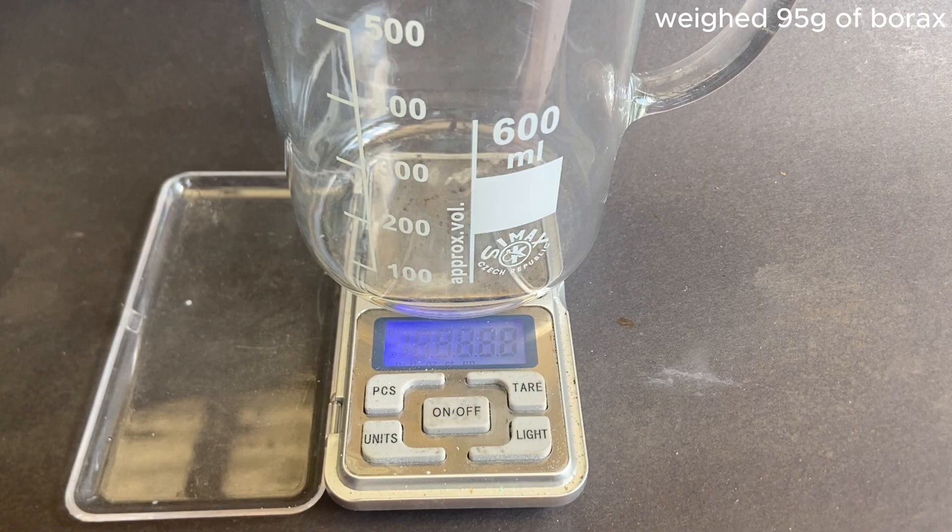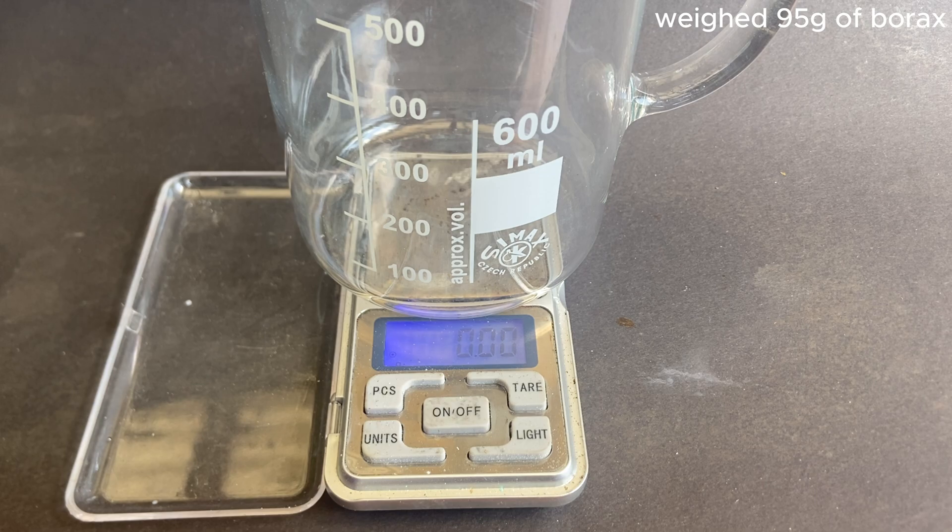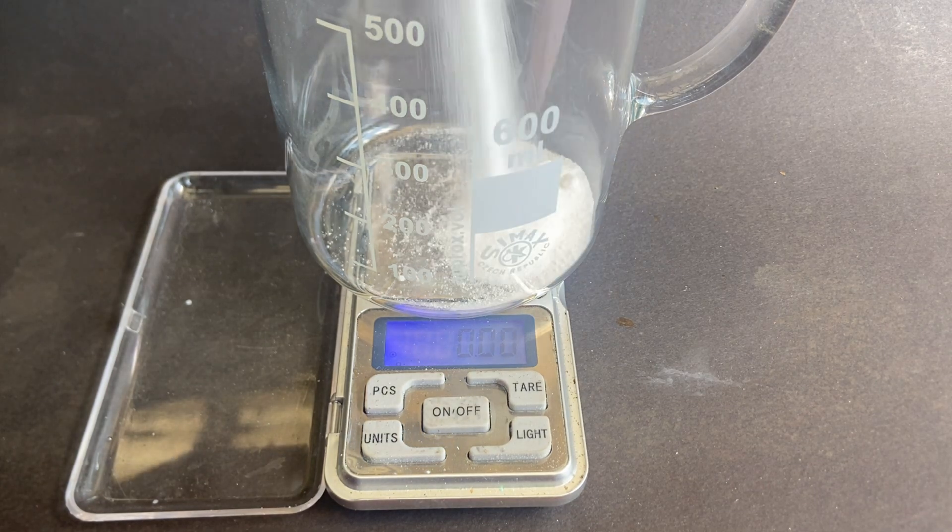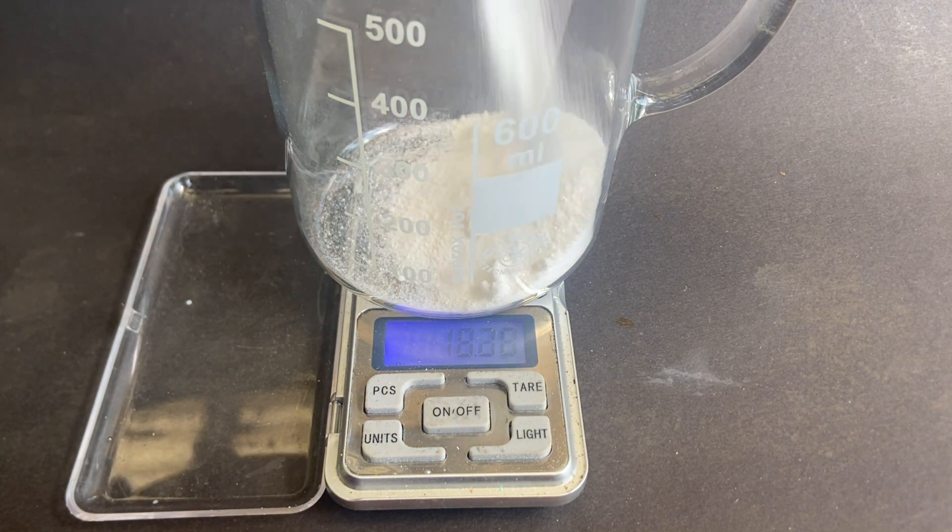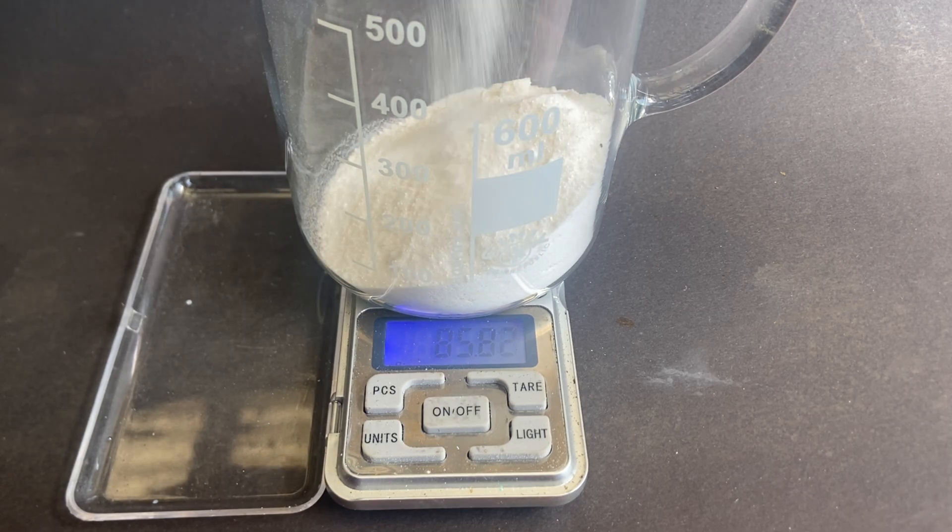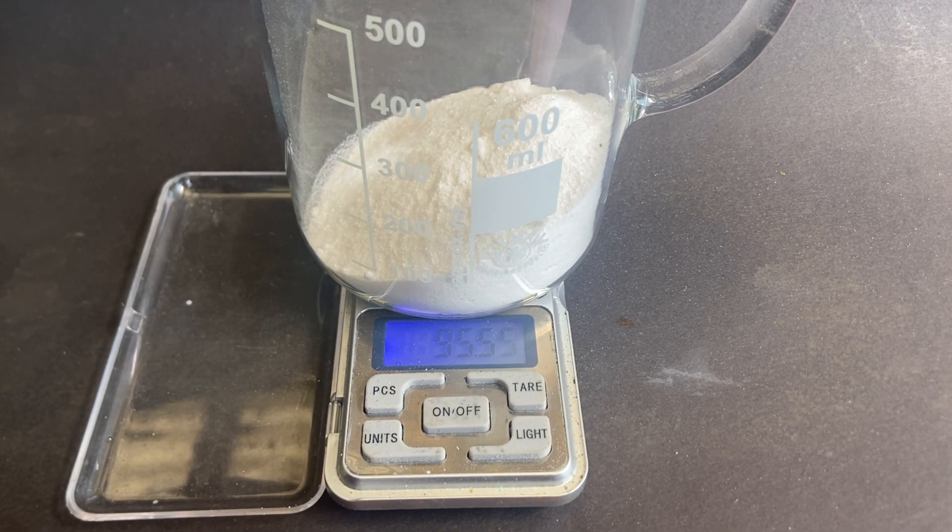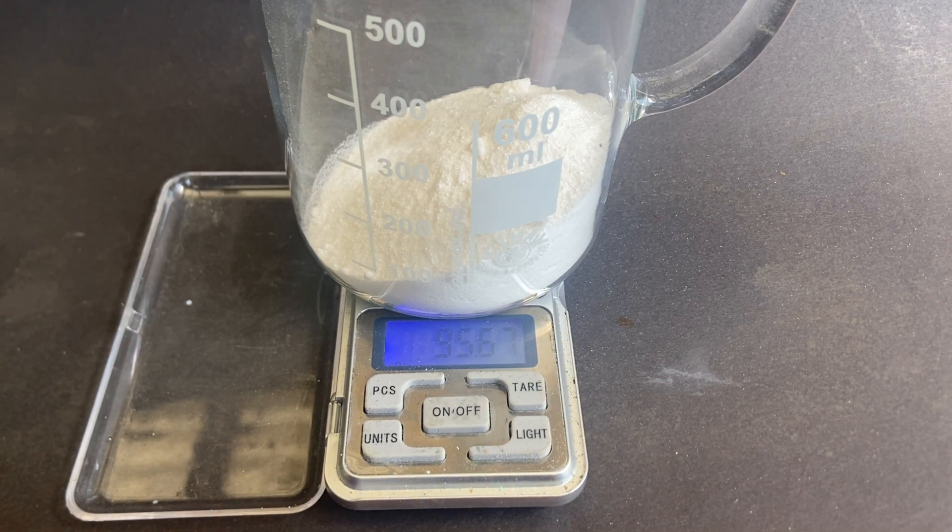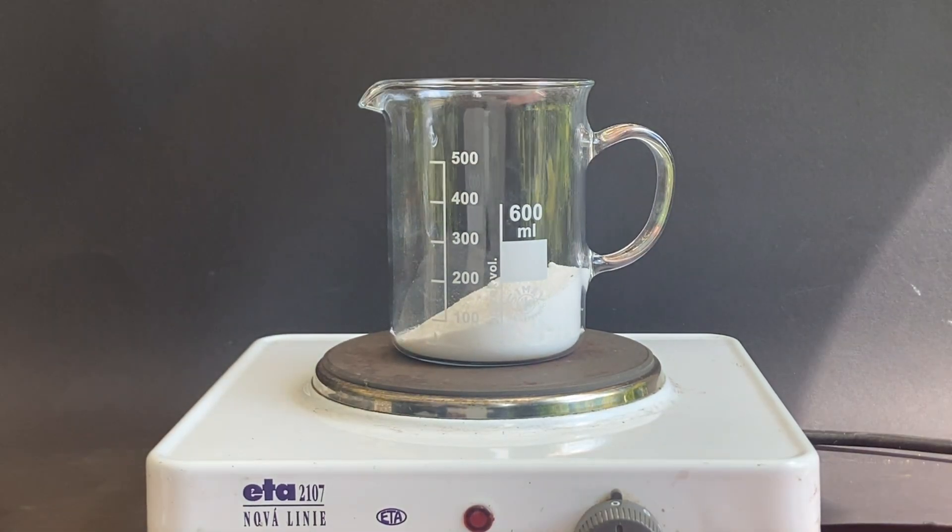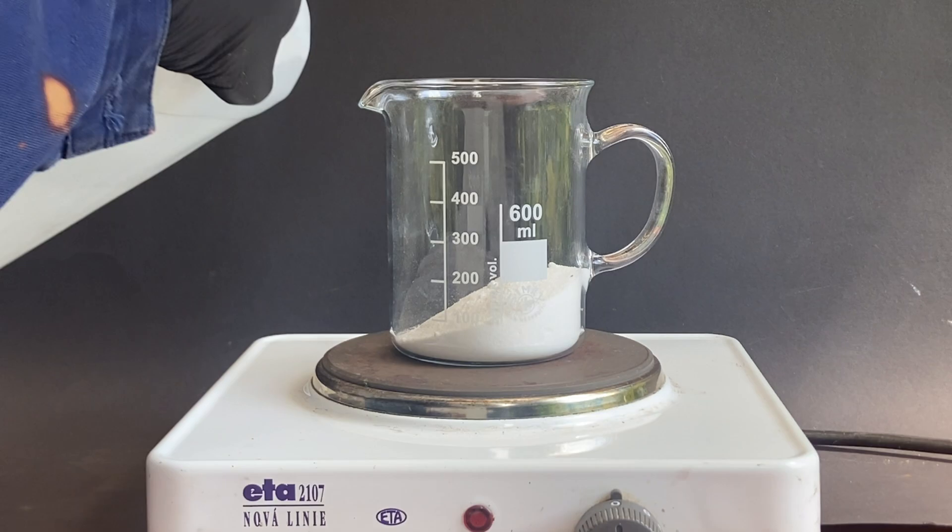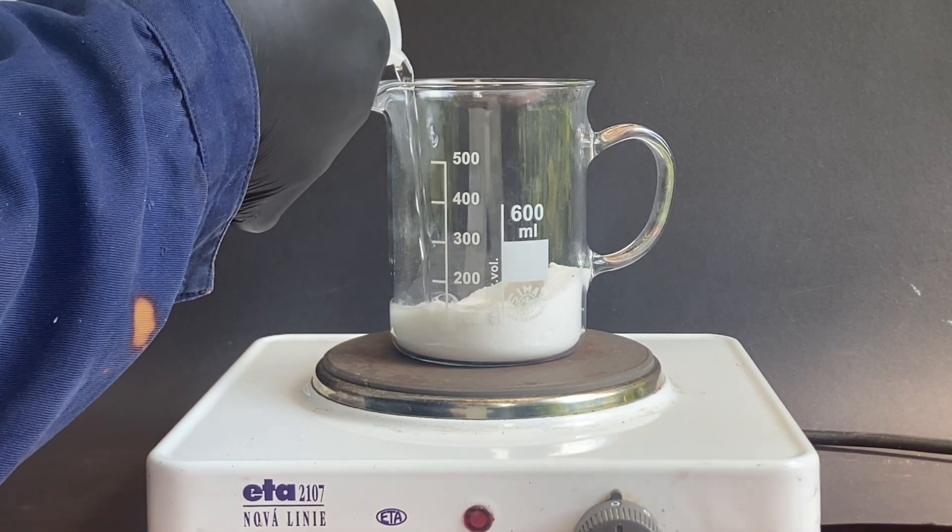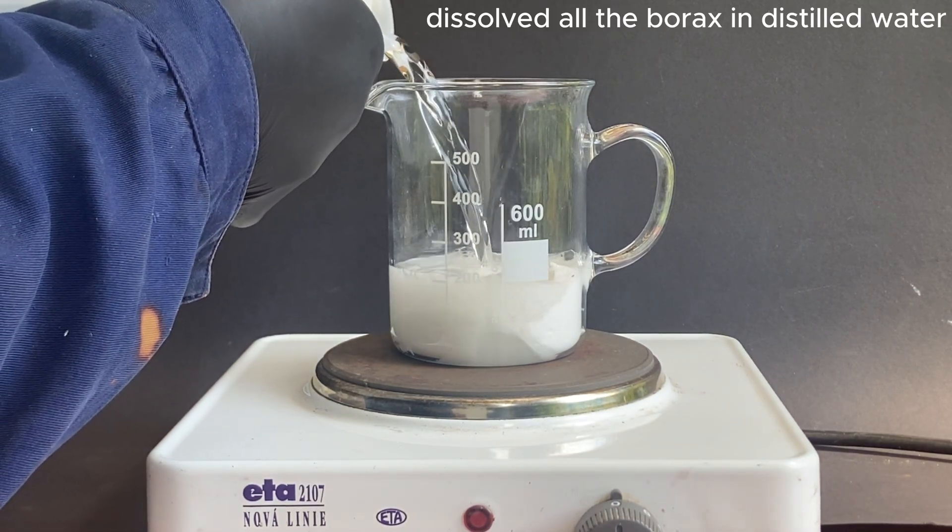In today's video I will turn borax into the element boron. First I weighed 95 grams of borax and added around 400 ml of distilled water.